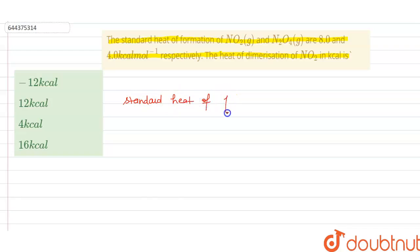Standard heat of formation is the change in enthalpy during the formation of one mole of the substance from its constituent elements, with all substances in the standard state.